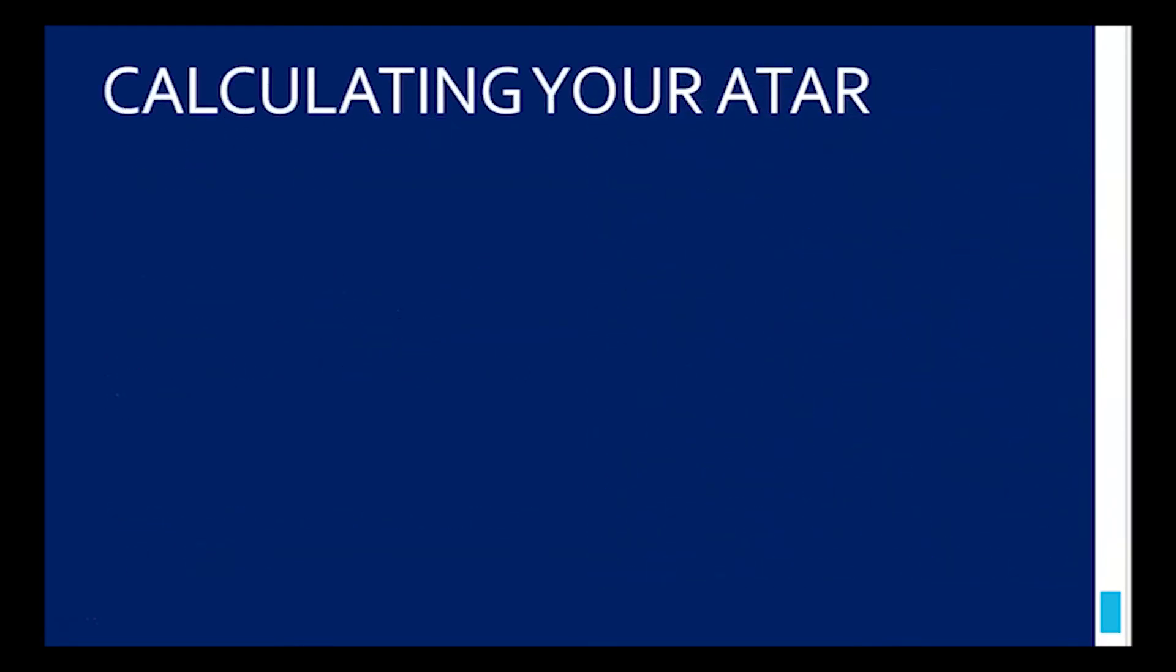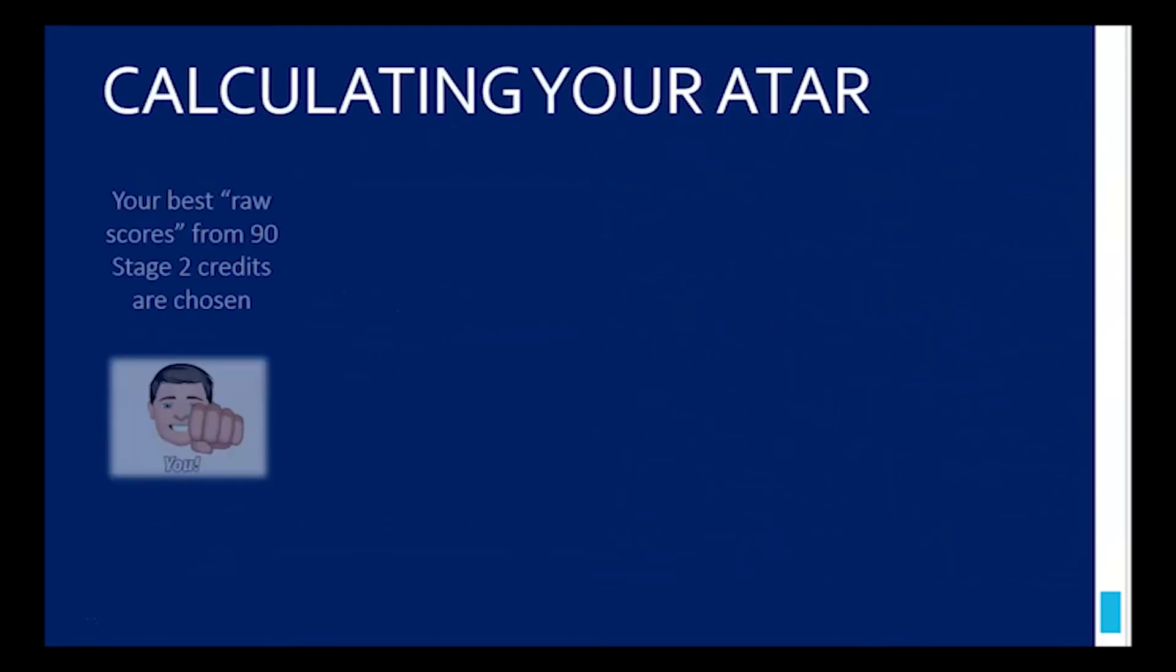Calculating your ATAR involves a couple of different steps. Firstly, your best raw scores from 90 Stage 2 credits are chosen. You do the best you can, and you will get a score out of 20 for each of your subjects. They choose the best 90 Stage 2 credits for you. You don't have to tell them which subjects to choose - they will automatically take your best ones.